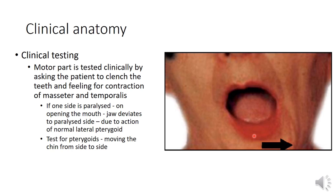Remember: if one side mandibular nerve is paralyzed, on opening the mouth the jaw deviates to the paralyzed side. The pterygoids are specifically tested by moving the chin from side to side.